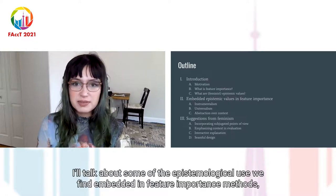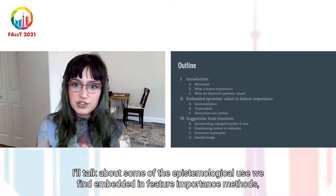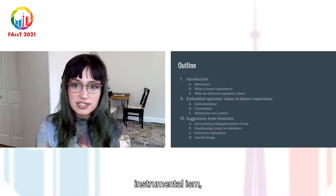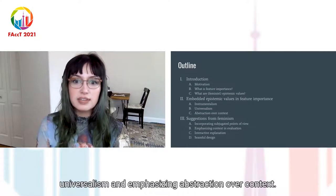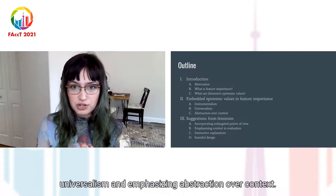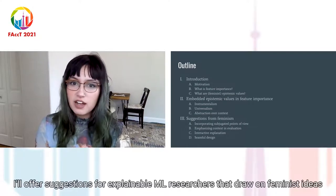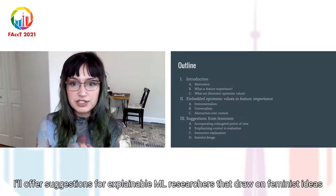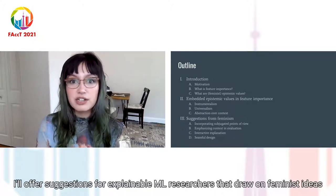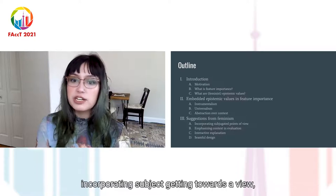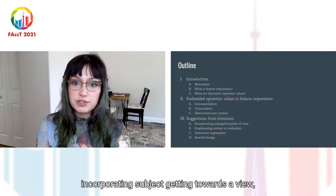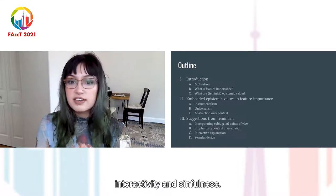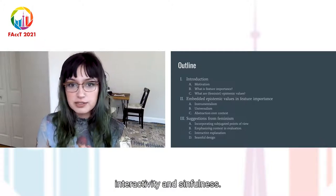I'll talk about some of the epistemic values we find embedded in feature importance methods: instrumentalism, universalism, and emphasizing abstraction over context. And finally I'll offer suggestions for explainable ML researchers that draw on feminist ideas, incorporating subjugating points of view, evaluating explanations in context, interactivity, and seemfulness.